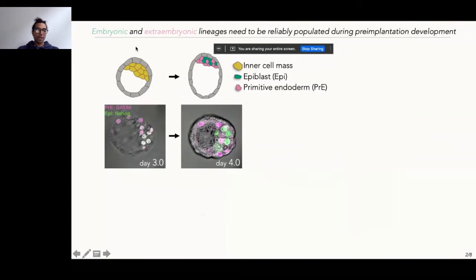What you see schematized here is the early mouse embryo — the grey stuff is the trophectoderm, and you can see corresponding images of these embryos below. At a very early stage of mouse development, cells from the inner cell mass — the yellow stuff here — undergo a fate decision and give rise to two different cell types: the cells of the epiblast, shown in green, and cells of the primitive endoderm, shown in pink.